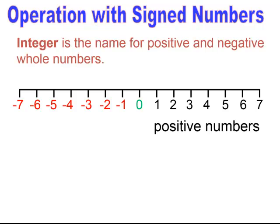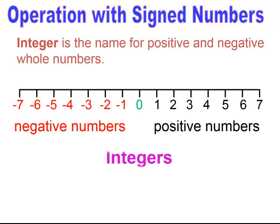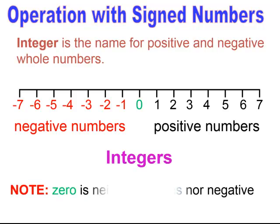Negative numbers are to the left of zero on a number line and you will see the negative sign to represent that it's a negative number. So negative numbers will have a negative sign, positive numbers will not have a sign. A key note is that zero is neither positive nor negative. Negative numbers will have a negative sign or a minus sign.